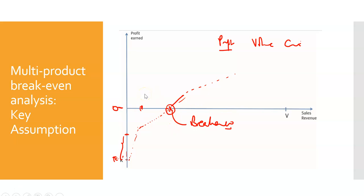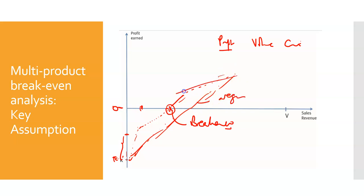So that's why this is also important. And ultimately, what we've just been doing — this whole average weighted C over S ratio — is really finding this average line on the profit volume chart, which is the average of all three products: product one, product two, and product three.